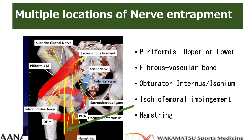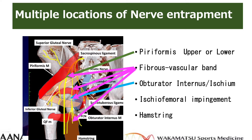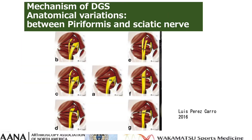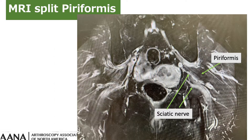There are several reports indicating multiple locations of nerve entrapment: piriformis, fibrovascular bands, obturator internus, ischiofemoral impingement, and hamstrings. Some patients with DGS have two or three locations of nerve entrapment. In 70% of people, the piriformis muscle is pierced by part or all of the sciatic nerve. Several variations occur, but the most common anomaly is Beaton type B, in which the common peroneal nerve pierces the piriformis muscle. Sciatic nerve abnormalities can be assessed by MRI. This MRI shows the superior division of the sciatic nerve and the piriformis split, with the sciatic nerve coursing between two parts of the piriformis muscle.